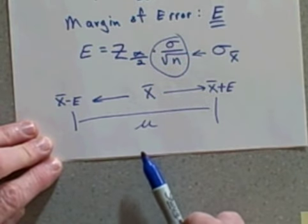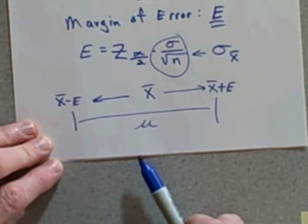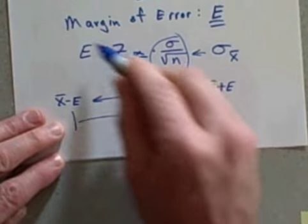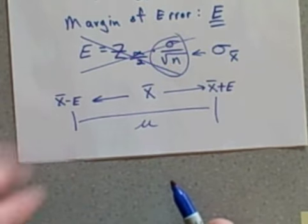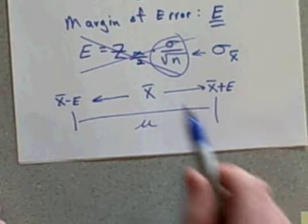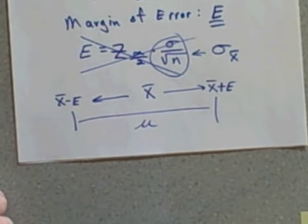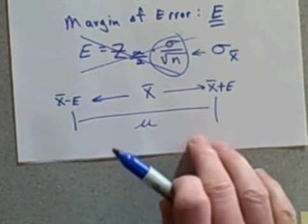But notice my formula for E requires that we know the population standard deviation. We're not going to know that. We're not going to know it, so what are we going to do? Well, what it really means is we can't use this formula. That's too bad because it's really simple and uses z-scores we already knew about. We need a new formula.